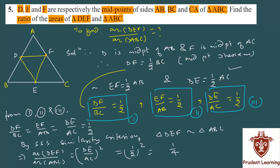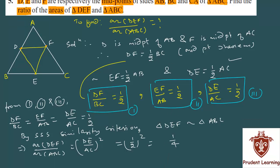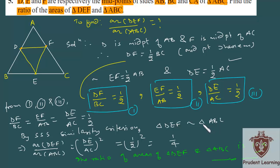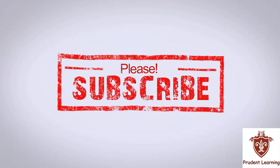Hence, the ratio of areas of triangle DEF and triangle ABC is 1:4. This completes the solution. Let us move on to the sixth question of the exercise.